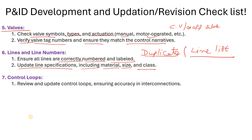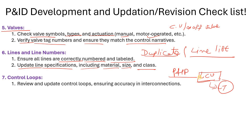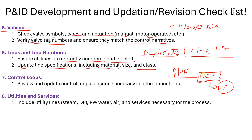Then the control loops — this point is also very important. If there is a level control valve, you need to show which LT it is connected to in the P&ID. Same for a flow control valve — with which FT it is controlling. And if there is a temperature control valve — with which TT it is controlling. These points are important and must be implemented in the P&ID.